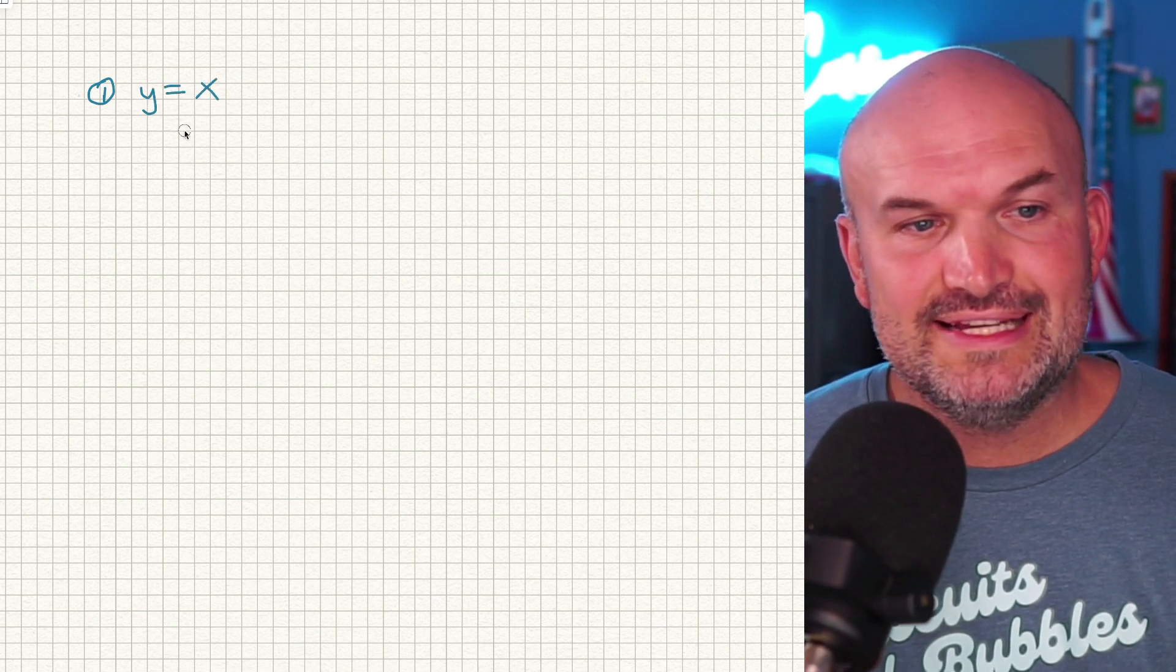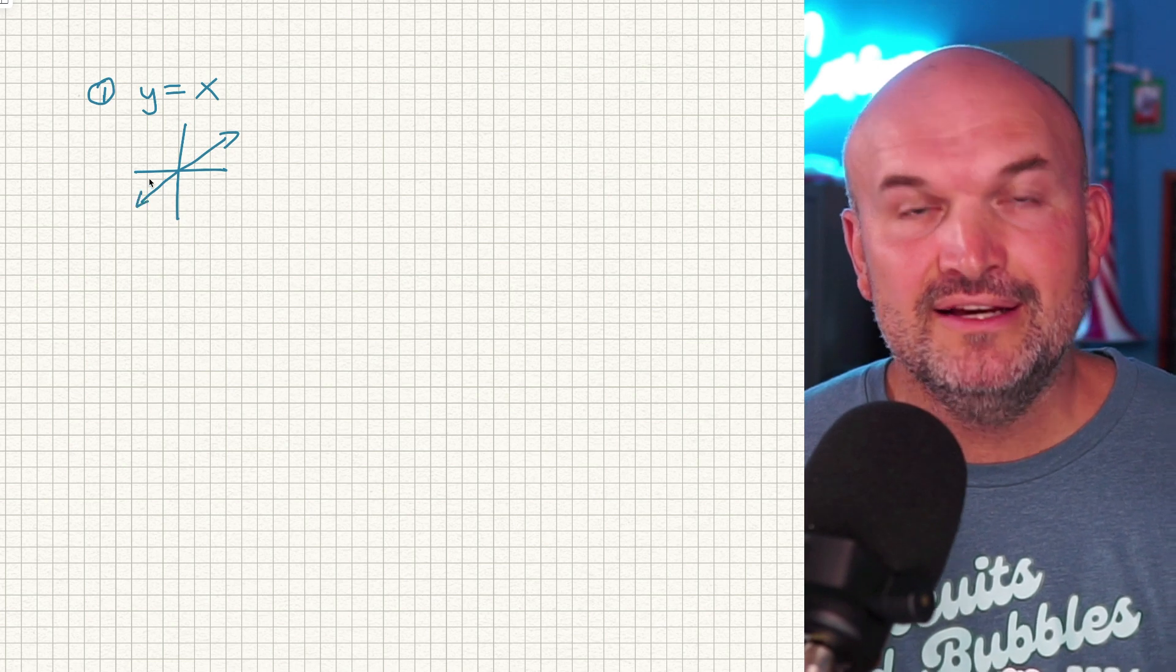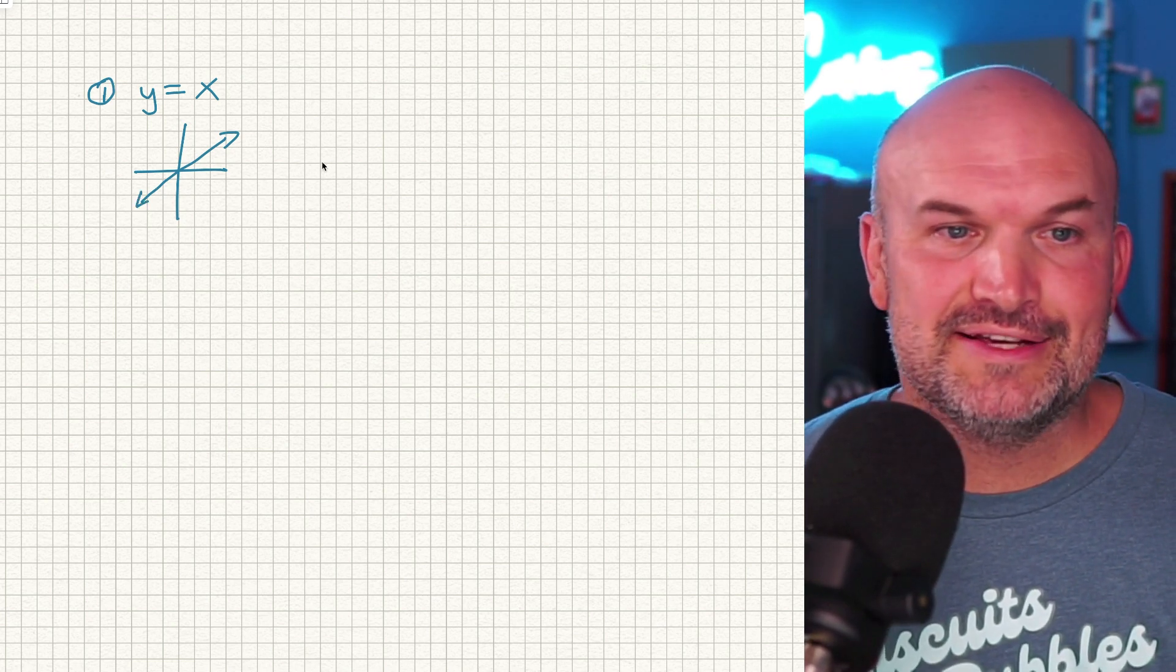So the first one that we're going to talk about is going to be the identity function. That is simply just going to be y is equal to x. So that function is our linear graph, as you can see, is going to go ahead and look like that.